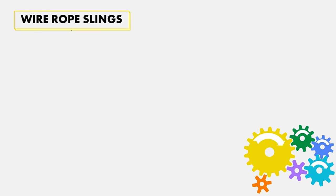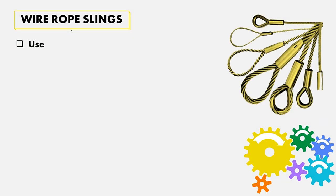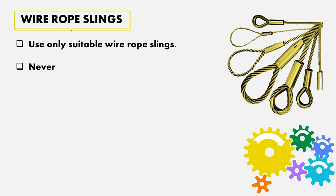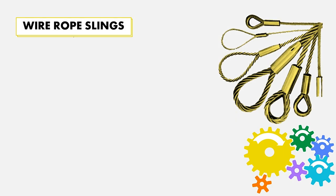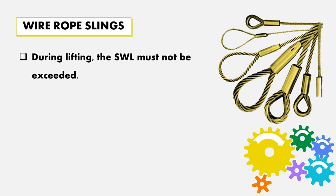Wire rope slings: use only suitable wire rope slings and never use damaged ones. Wire rope slings shall not be used and shall be disposed of if there are broken wires, burn marks, crushed sections, worn surface wires, or a change in diameter of the wire rope sling. During lifting, the safe working load must not be exceeded.